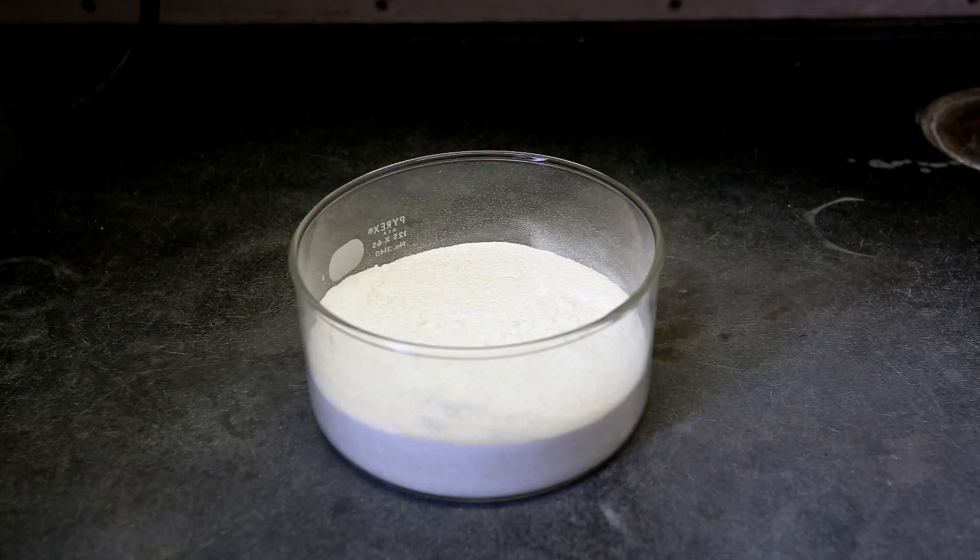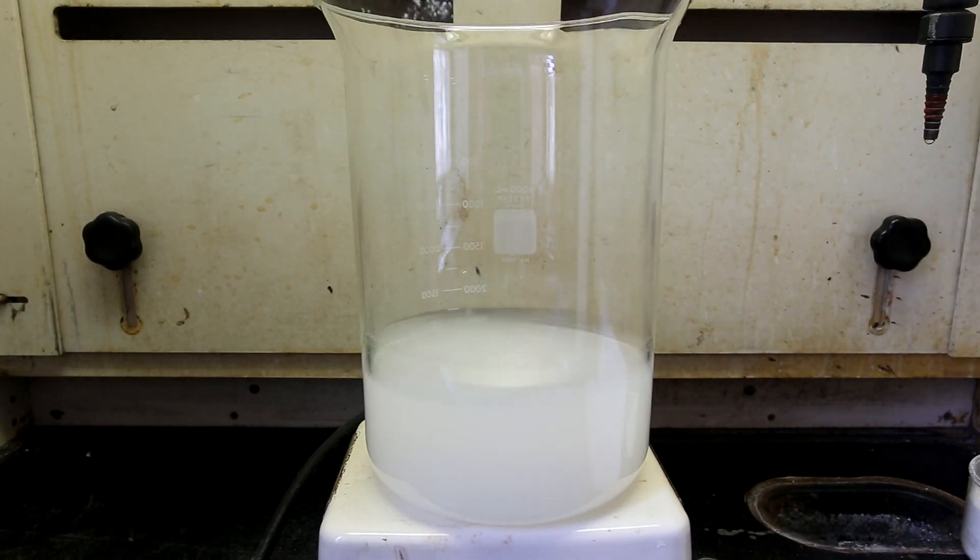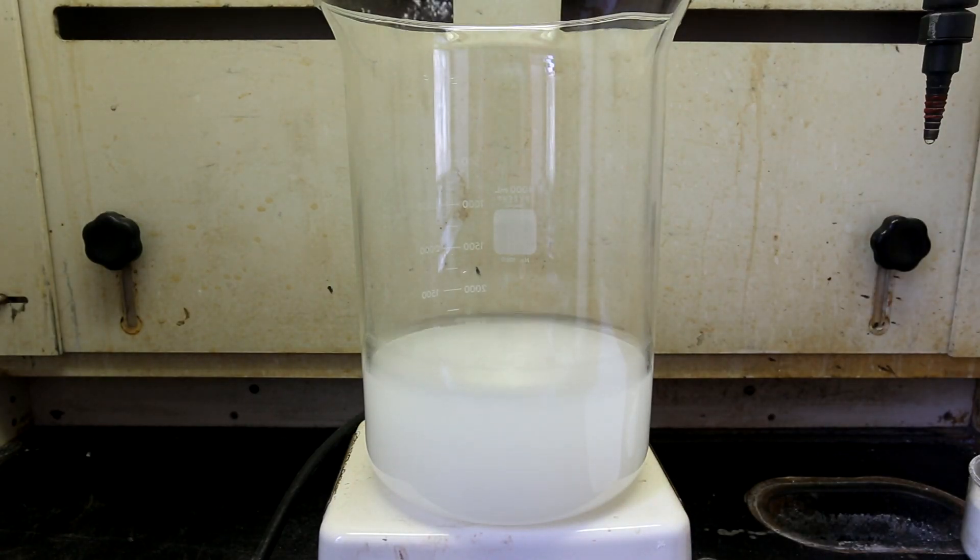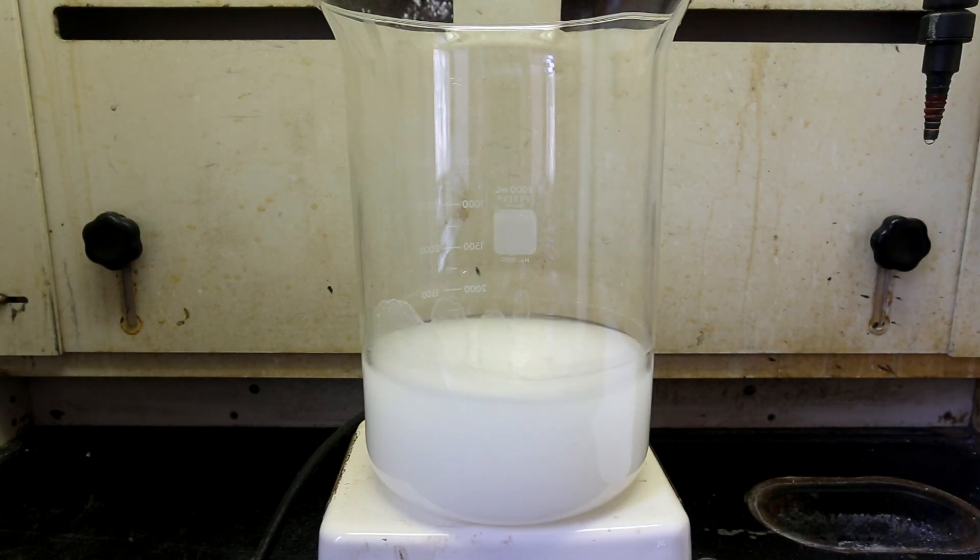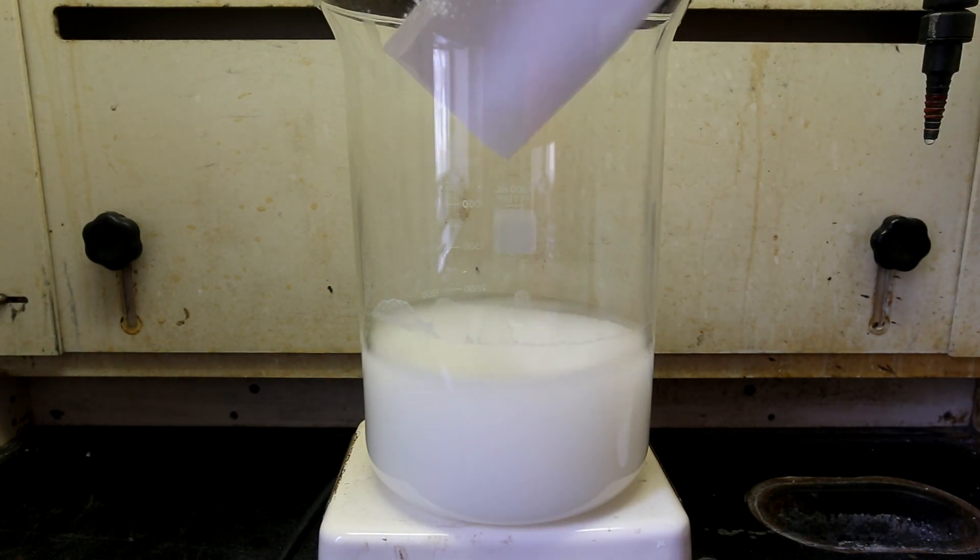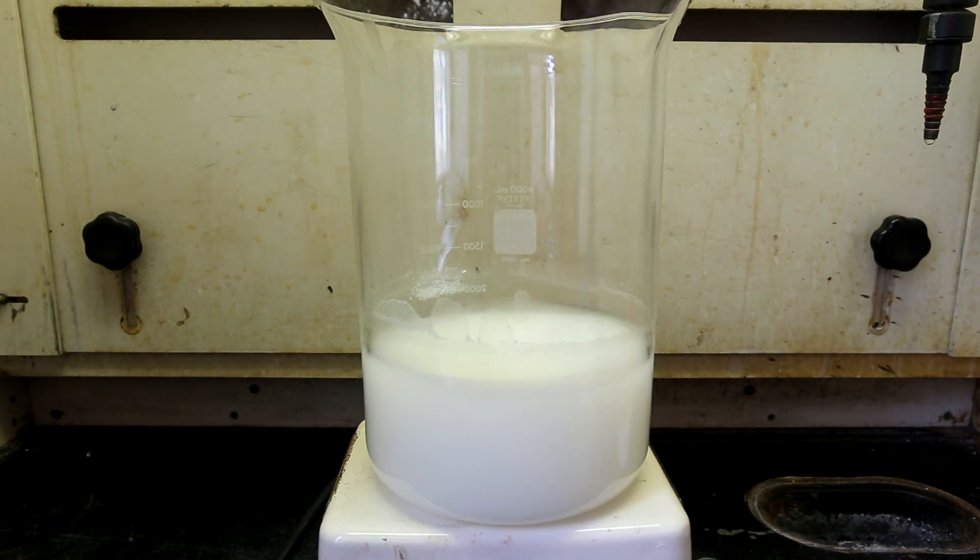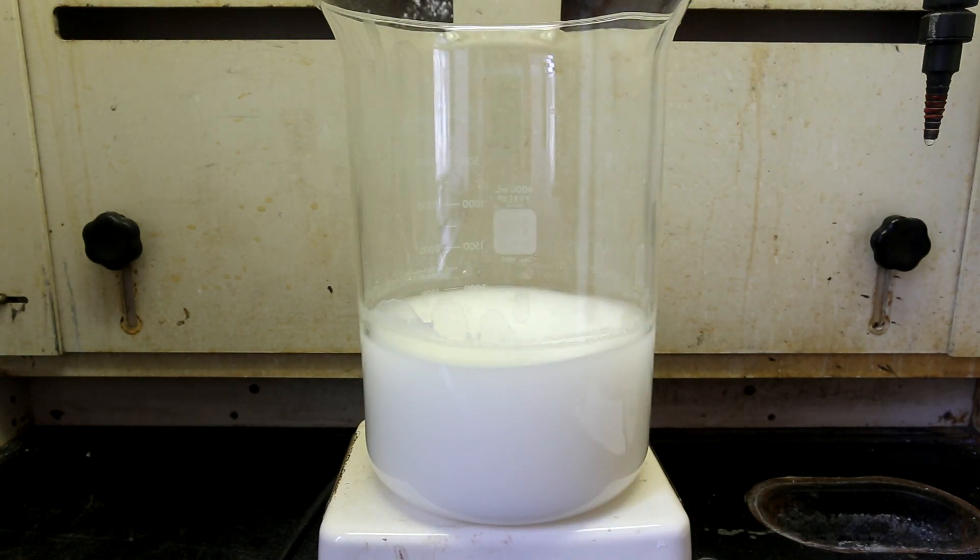This is what the final powderized 500 tablets looked like. I then dissolved all of the crushed up aspirin in about 1 liter of acetone. You could easily replace the acetone with methanol or ethanol. I added the aspirin powder slowly to avoid jamming the stir bar with excess undissolved powder.